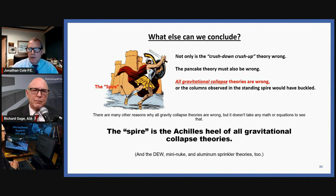Now there's many other reasons why all gravity collapse theories are wrong. The missing jolt, all kinds of other reasons. But this is just a direct observation. It doesn't take any equations or any math to see it, that it has to be wrong. The spire, that standing spire, is the Achilles heel of all gravitational collapse theories.